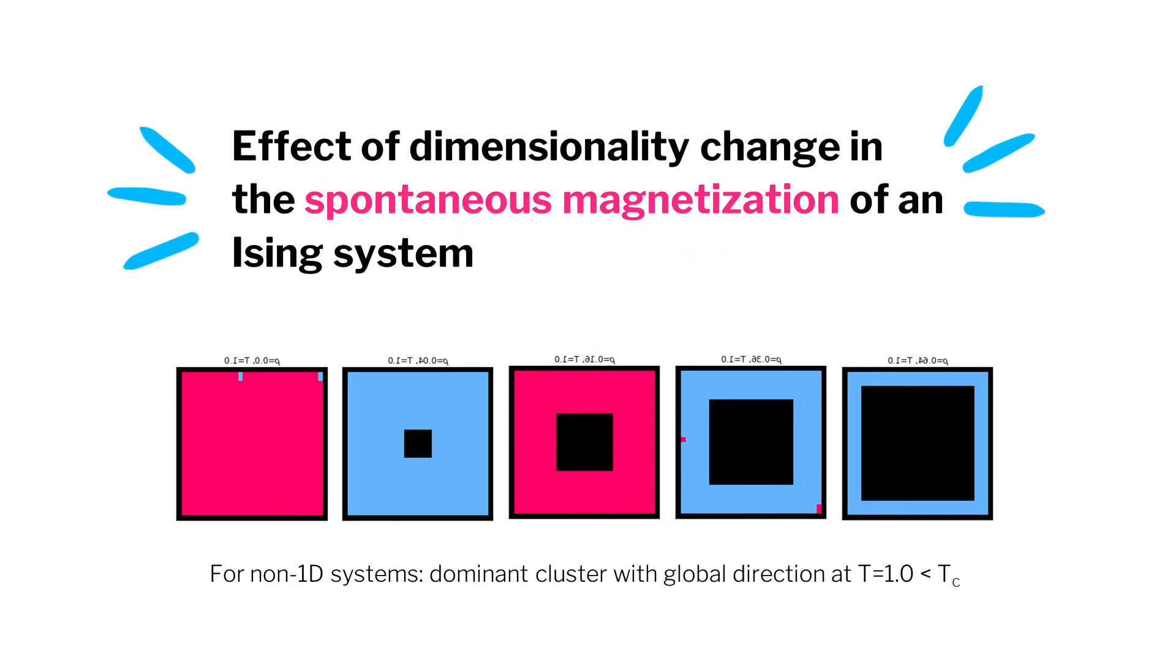This implies that the reduced dimensionality has an effect on the presence of spontaneous magnetization, which marks the phase transition in the Ising model.